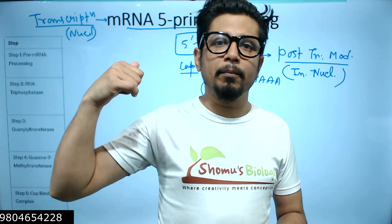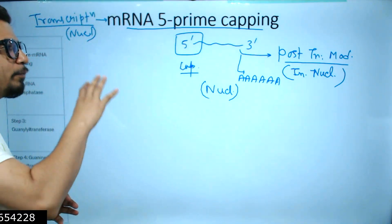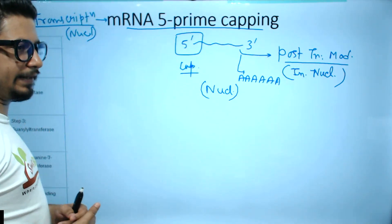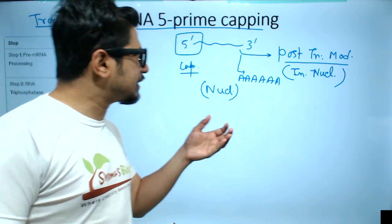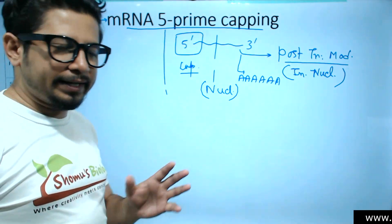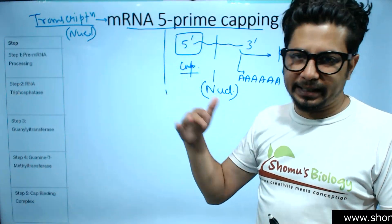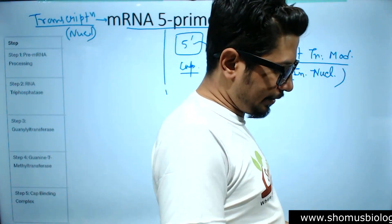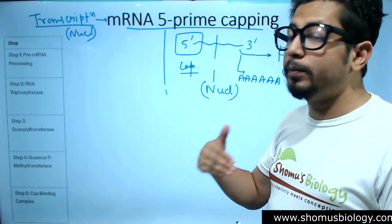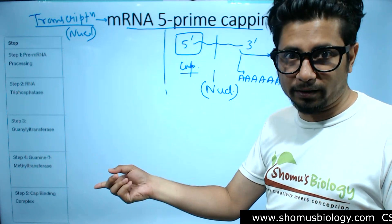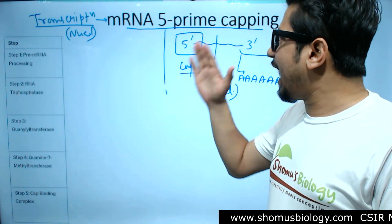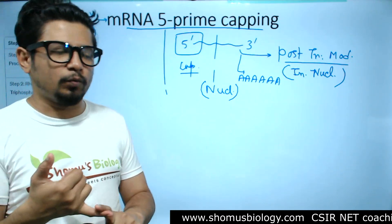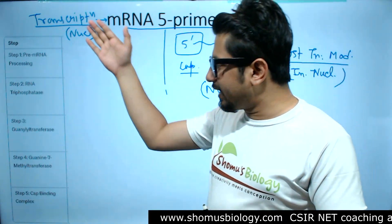These modifications are also involved in the process of translation — translation is more efficient when the mRNA is modified at both the 5' and 3' ends. This is why post-transcriptional modification exists in eukaryotes but not in prokaryotes. The mRNA produced right after transcription is called premature mRNA or pre-mRNA. That premature mRNA must be matured before it can be exported from the nucleus to the cytosol. Once modifications are done, we call it mature mRNA.